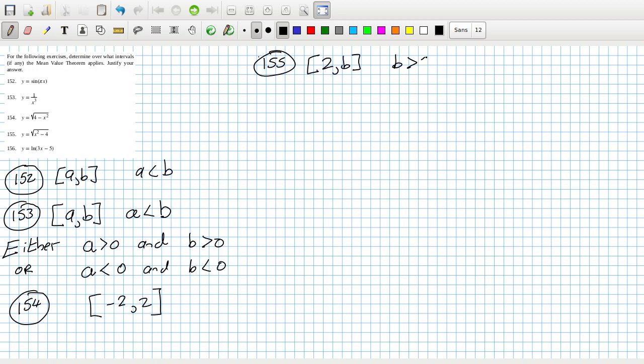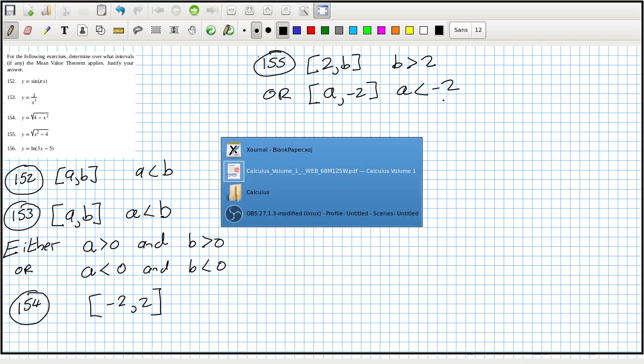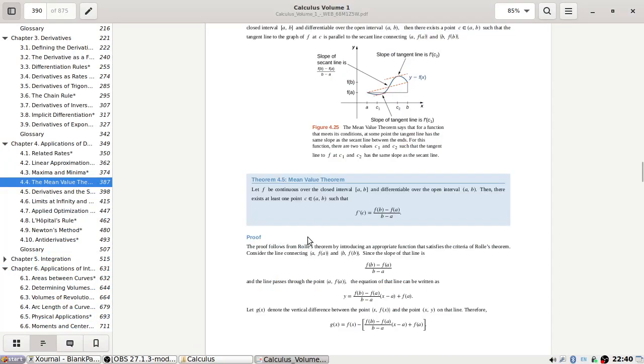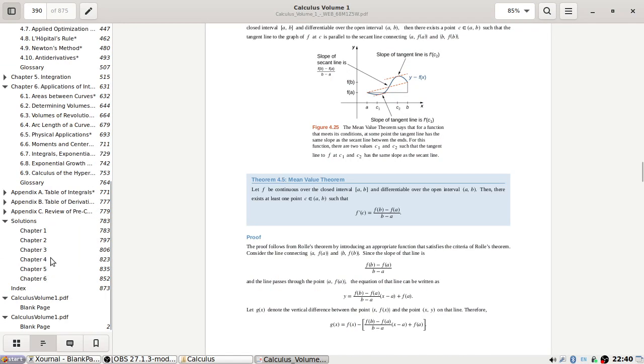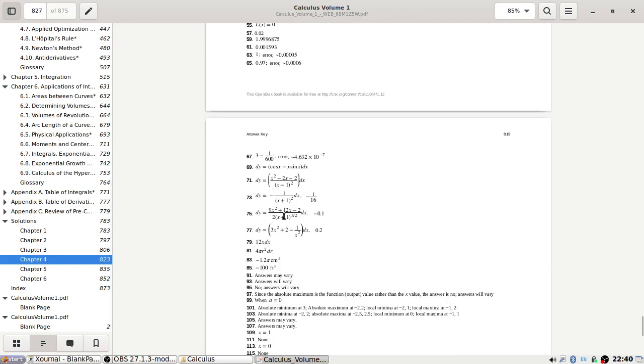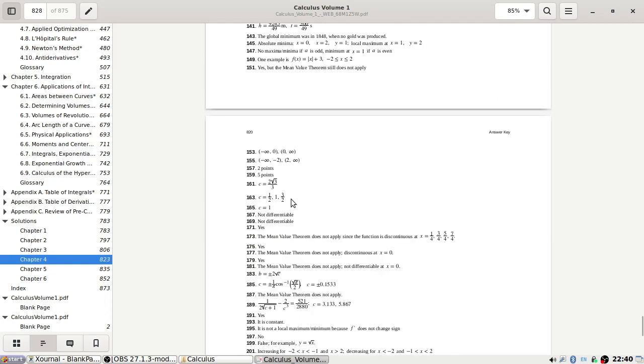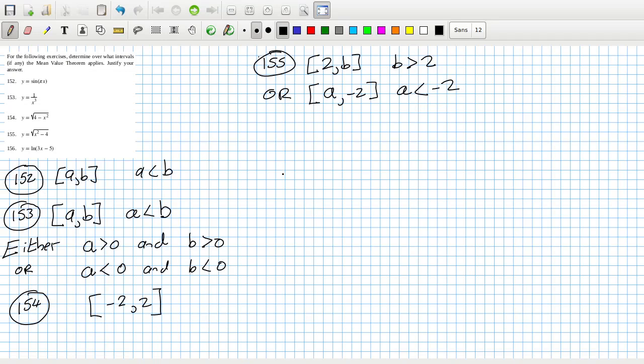Where b is more than two, or a to minus two where a is less than minus two. Let's check the answers. Why are these intervals open though? I must be doing something wrong. 156 - we need three x minus five to be positive, so three x greater than five, so x greater than five over three. So that would be a to b where a is some number greater than five over three and b is greater than a.